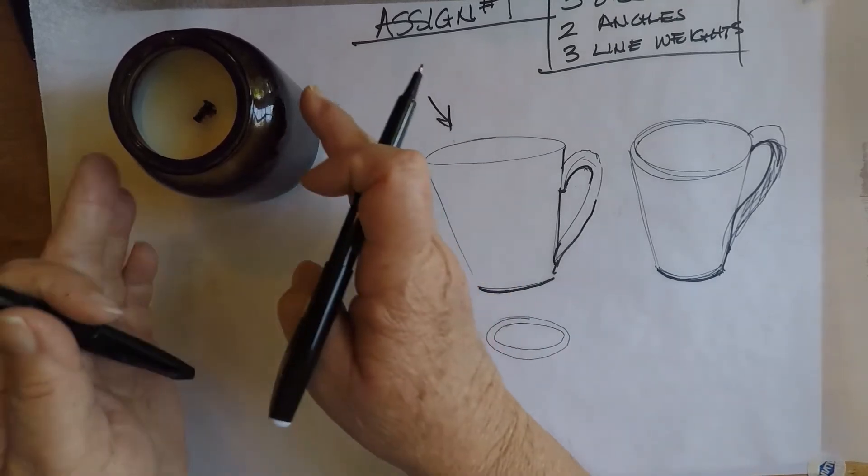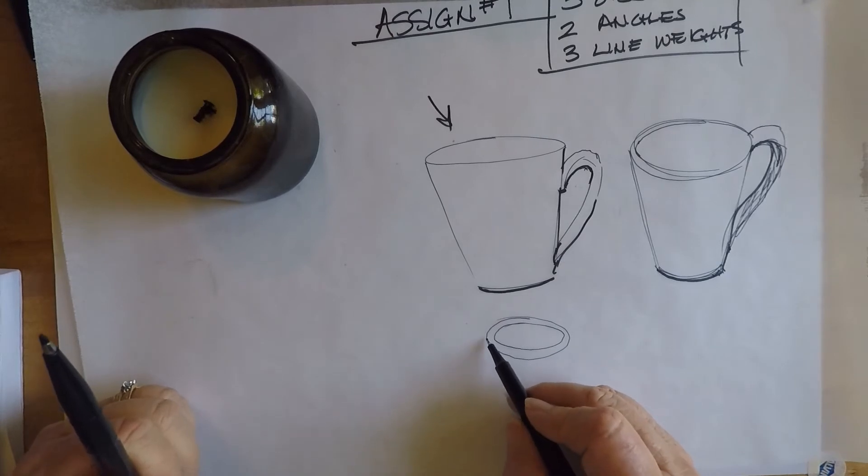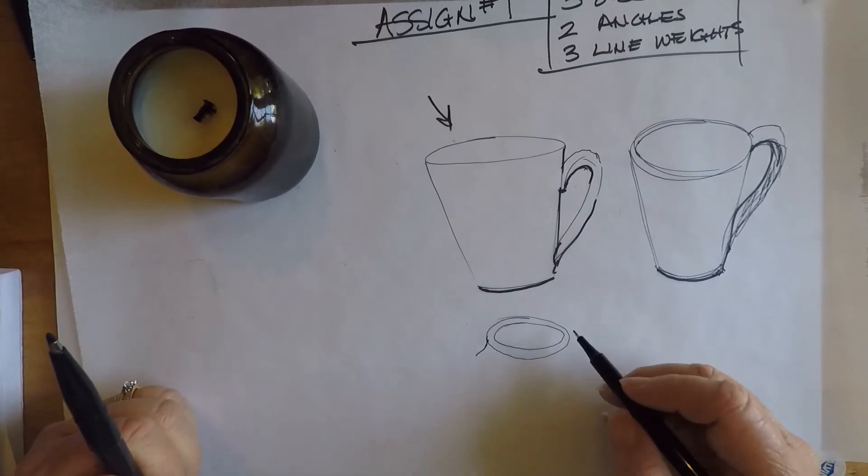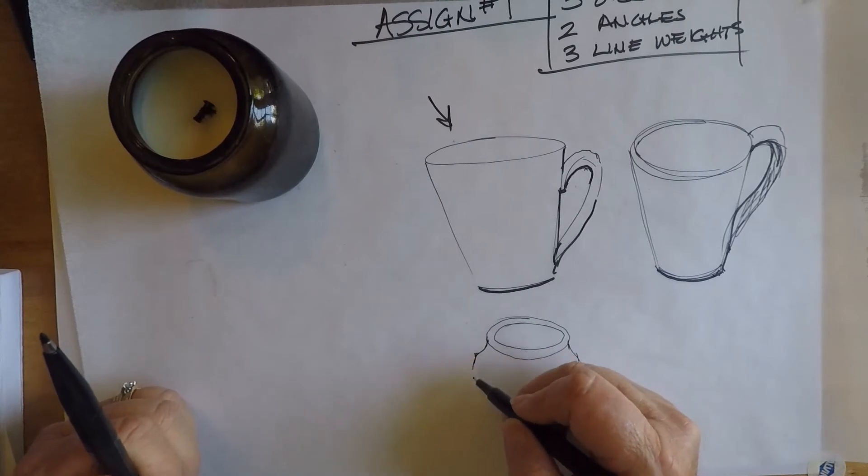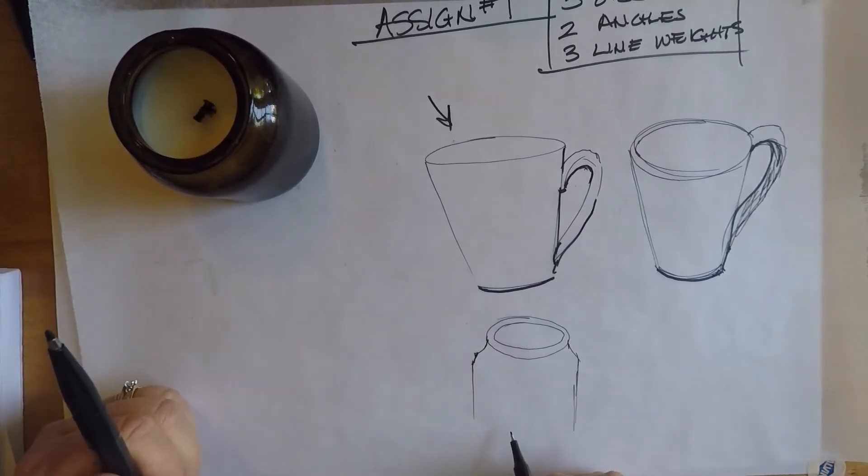By the way, round things are a little more tricky than square things. If you're looking for something easier, you might do a square object. I'm just going to lightly bring down the sides of the object and the base of the object.